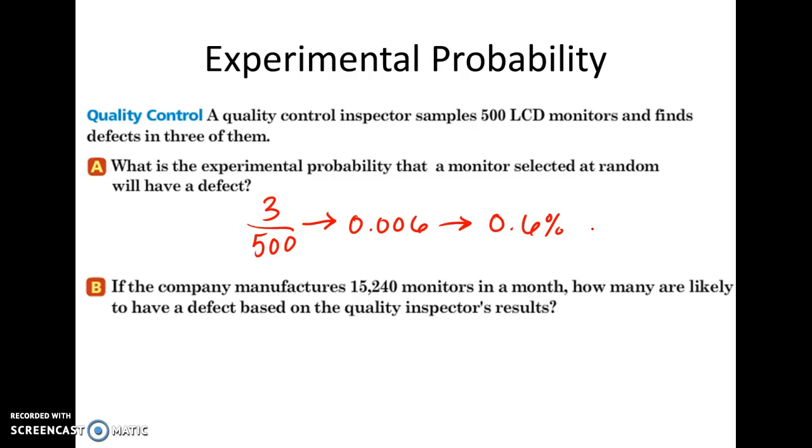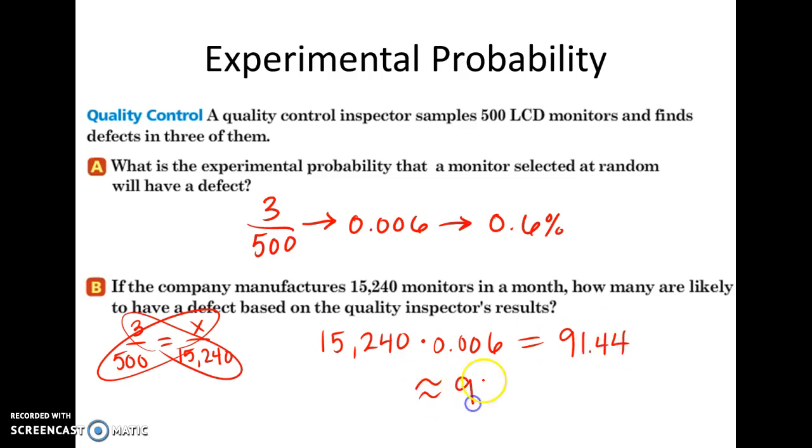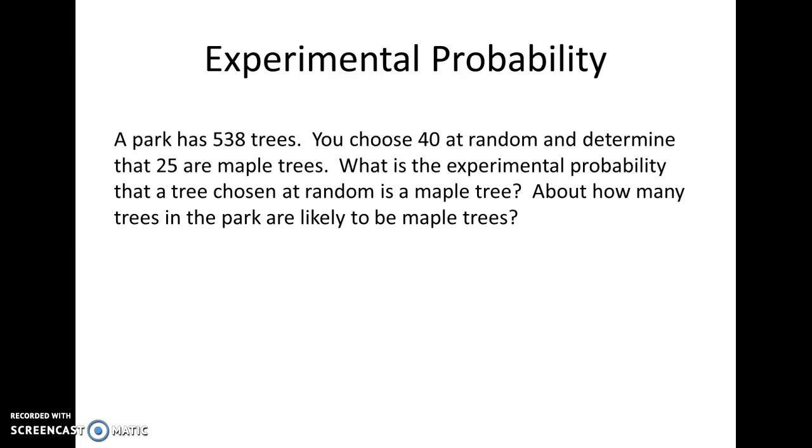But if a company makes, so part B, if they make 15,240 monitors in a month, how many are likely to have a defect? So 0.6% doesn't seem like a lot, but when you're making more, we want to figure out how many will be defective. So there are two ways you could do this. You could set up a proportion. If three are defective out of 500, how many are defective out of 15,240? Then you would cross multiply and divide, and you'd get your answer. But another quick way you could do this, since you've already calculated the percent, 15,240 times the decimal percent, so 0.006, is going to give you your answer. So if you plug that into your calculator, 15,240 times 0.006, you're going to get 91.44. So approximately 91 LCD monitors will be defective. This is experimental probability.